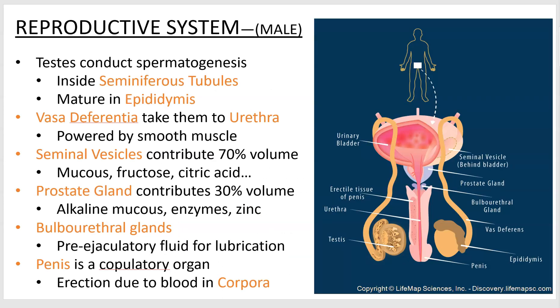We'll start with the male. Here's a simple diagram of the male reproductive system — a macro view. The testes are where you make the sperm cells, specifically inside tubules called seminiferous tubules. Then they go on to mature in the epididymis, labeled there. The epididymis is kind of a little sidecar thing on one of the testes. The vas deferens — vasodeferens is singular, vasodeferentia is plural — is the tube that takes the sperm via muscular contractions up and around the bladder, back past a few glands, which produce most of the fluid in a single ejaculate.